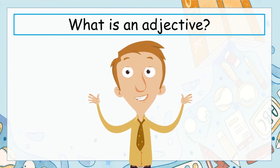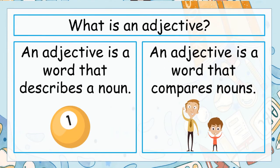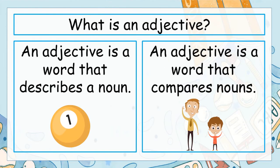Well, what did you get? An adjective is a word that describes a noun — it gives us more information about the noun. For example, this ball is yellow, so yellow is an adjective. It tells us more about the ball. An adjective is also a word that compares two nouns.